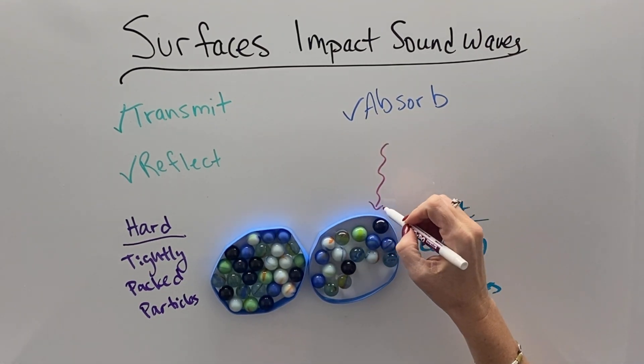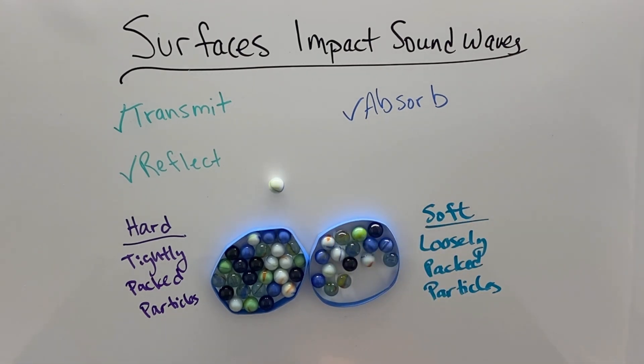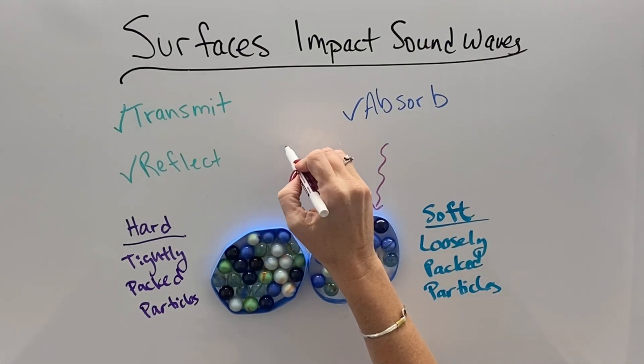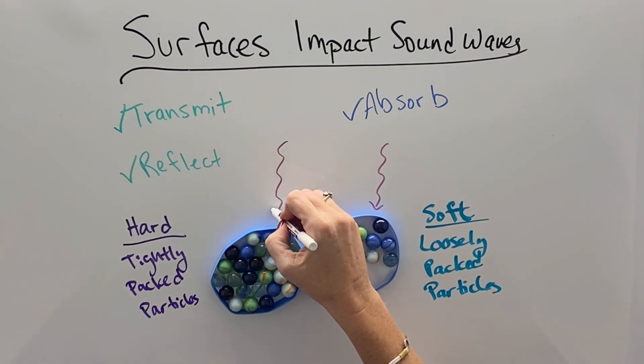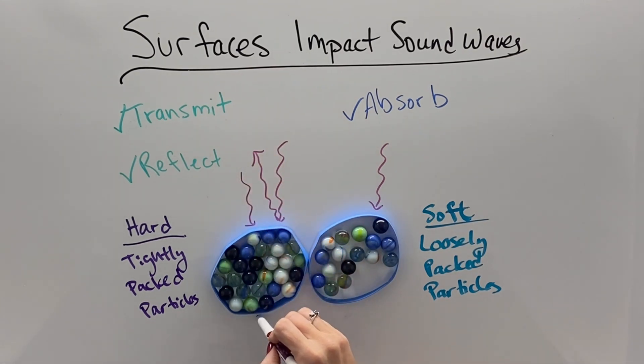And so we see it sort of dissipate or be absorbed. Whereas when we put energy into a tightly packed surface, then the energy is able to hit one after another after another chain reaction so that the energy can be reflected back off or through the substance.